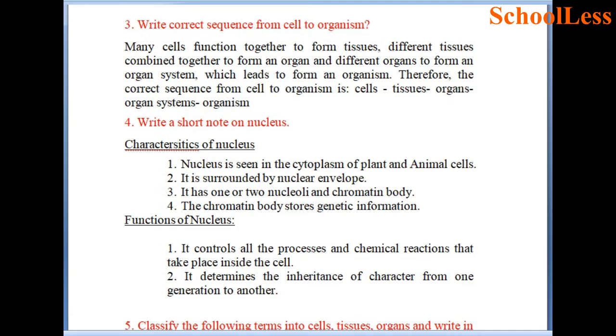Question 3: Write the correct sequence from cell to organism. Many cells function together to form tissues. Different tissues combined together form an organ. Different organs form an organ system, which leads to an organism. The correct sequence is: cells → tissues → organs → organ systems → organism.